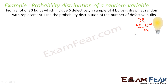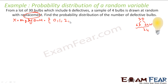You take out 4 bulbs at random with replacement. That means you are replacing, so it is an independent event. Since you are replacing, it is an independent event. Find the probability distribution of number of defective bulbs. Since you are taking out 4 bulbs, X is nothing but the number of defective bulbs. It may happen that none, 1, 2, 3, or all 4 bulbs are defective.